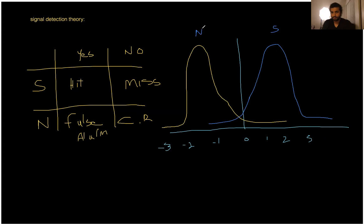This line right here is our criterion — our inner threshold. This is something we use to determine whether we heard the signal or didn't. We all have different thresholds and different biases regarding hearing a signal or not. Some of us are really conservative, some of us are really liberal. Given these two normal distributions — one for signal and one for noise — this is our criterion.